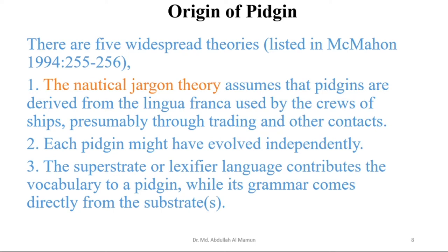The superstrate or lexifier language contributes the vocabulary to a Pidgin, while its grammar comes from the substrate. Superstrate means the language of the more powerful person in contact, and substrate is the language of the less powerful person. For example, when Europeans went to Africa, the language of the Europeans — English — was the superstrate, and the languages of the African people were the substrate. So in Pidgin, the lexifier or superstrate language contributes the vocabulary, and the grammar comes from the substrate, the less powerful people's language. It is common in African countries for people to use double negatives because in their language they have double negatives, or they mix their own form of negation with the negative aspect of the European language.